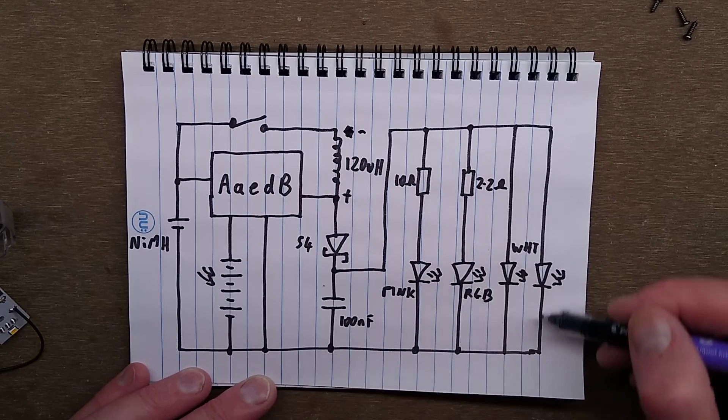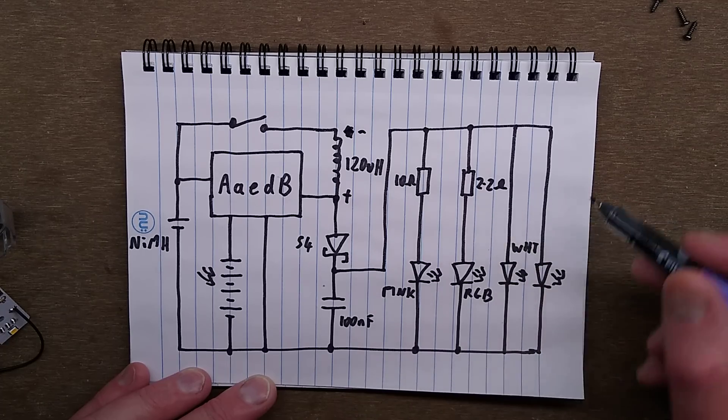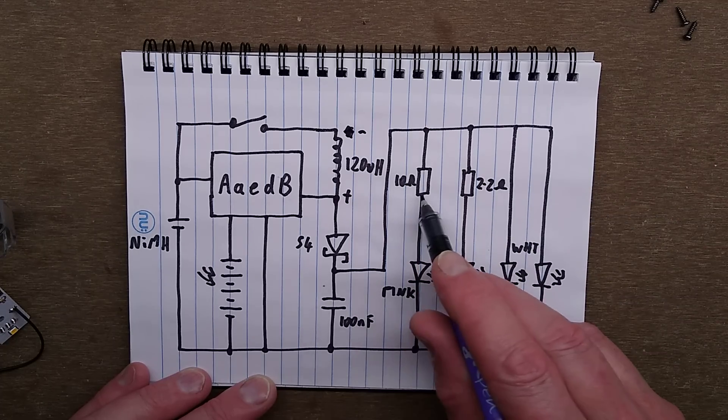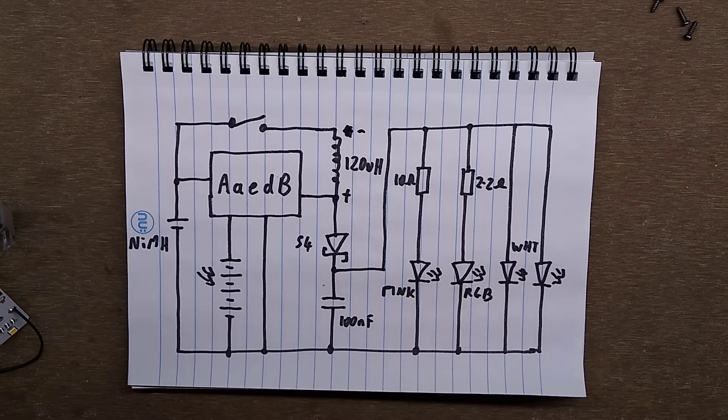The two warm white LEDs are just directly across that. The red green blue LED has a 2.2 ohm resistor in series and the pink LED has a 10 ohm resistor in series. That is it. It's quite a nice circuit board I have to say.